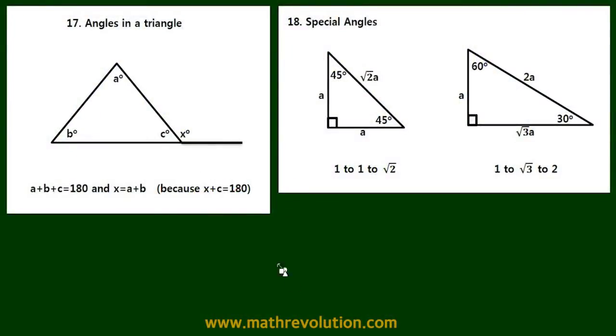In this video we're going to look at the angles in a triangle. The internal angles have a sum of 180 degrees, and x equals a plus b because x plus c equals 180 degrees.